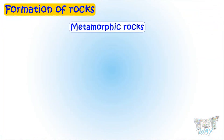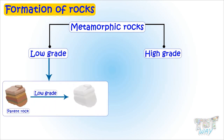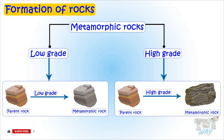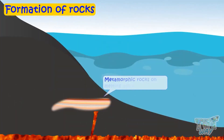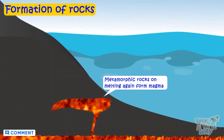Metamorphic rocks can be low-grade or high-grade depending on how much they have changed. Low-grade metamorphic rocks still appear very similar to the parent rock, while high-grade metamorphic rocks have been changed so much that they look very different from the parent rock. And metamorphic rocks melting again form magma.